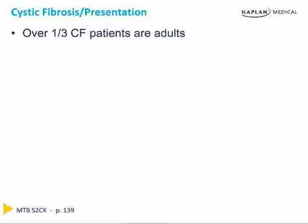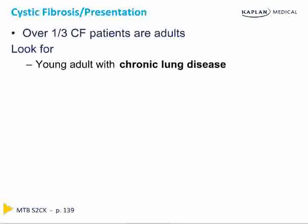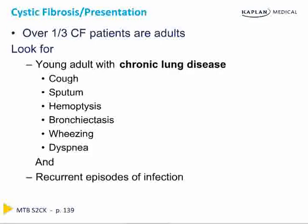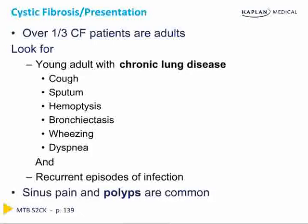With regard to clinical presentation, remember that CF is not just a disease of pediatrics — over one-third of CF patients present as young adults. Look for a young adult with chronic lung disease, repeated infections from a young age, cough, sputum, hemoptysis, bronchiectasis on imaging, and wheezing. Dyspnea can be seen in more severe courses, and patients will always complain of recurrent episodes of infection — pneumonia, bronchitis, sinusitis, or any combination of those.